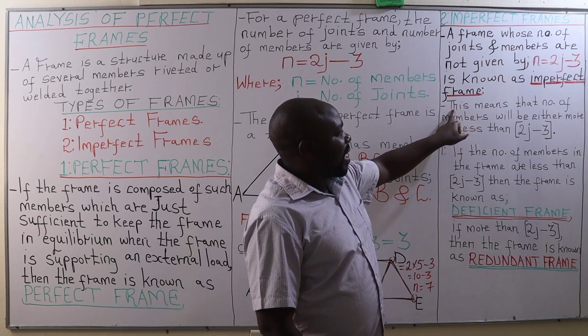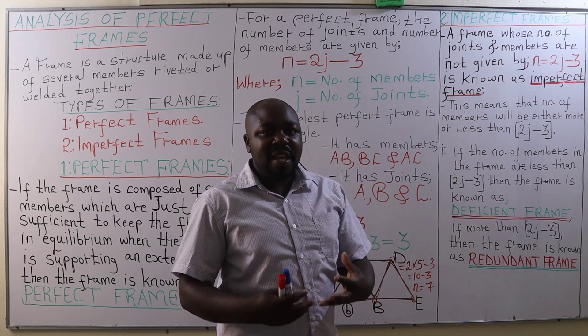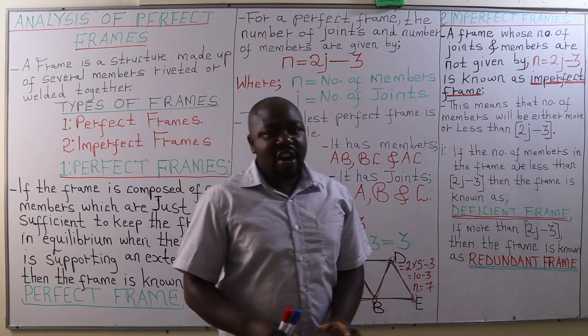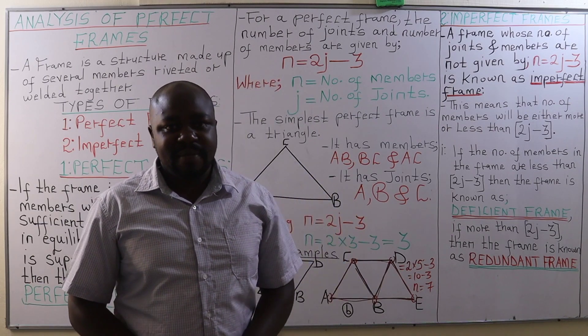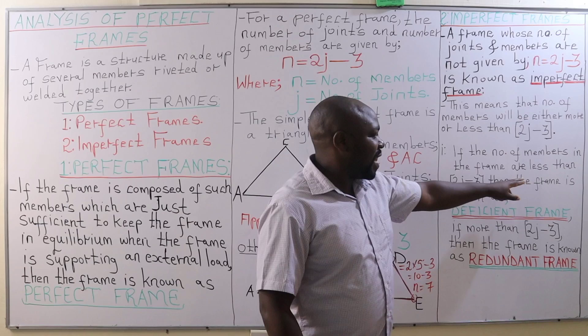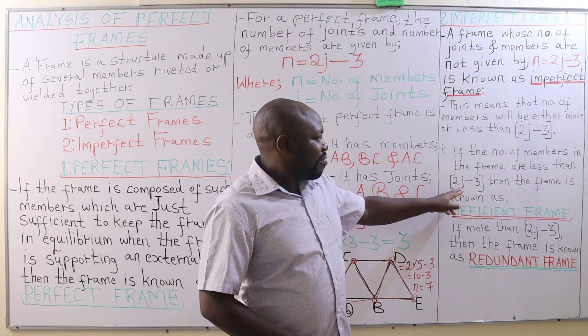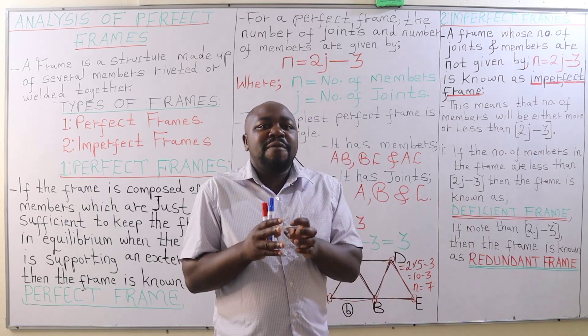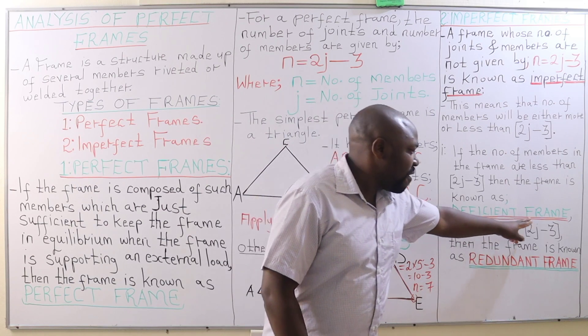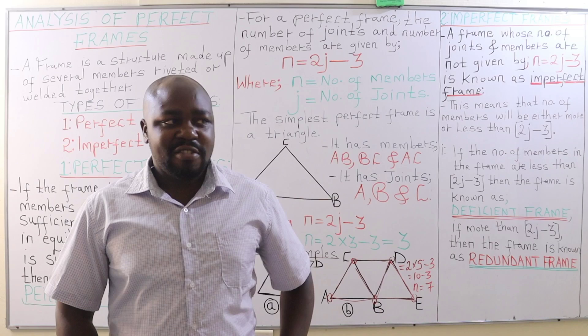This means that the number of members will either be more than 2j minus 3 or less than 2j minus 3. If the number of members in the imperfect frame are less than 2j minus 3, then the frame is referred to as a deficient frame, lacking in a certain number of members.